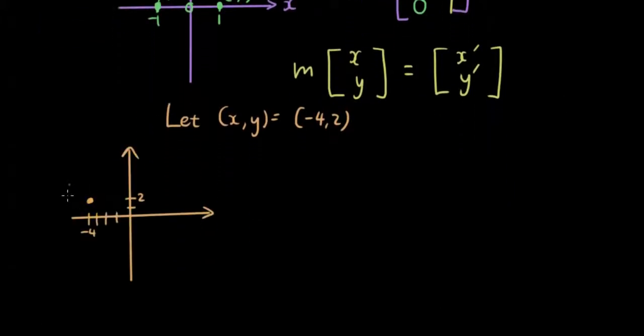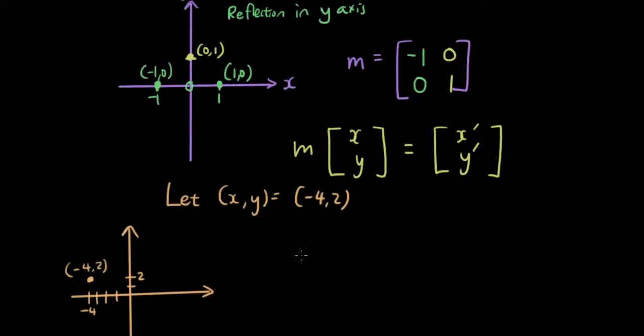The point is situated over here. And now if I multiply the reflection matrix which is negative 1, 0, 0, 1, if I multiply this matrix by my original point which is negative 4, 2, let's see what the answer is.